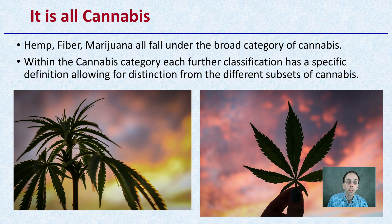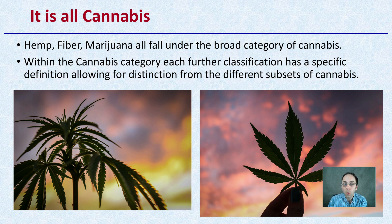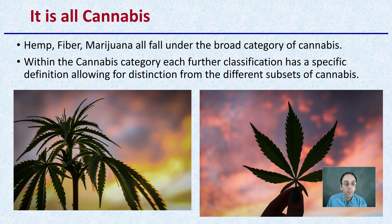First off, it's all cannabis in the sense that hemp, fiber, and marijuana all fall under the broad category of cannabis. Within the cannabis category, though, each offers further classification and has a specific definition allowing for distinction from the different subsets within the broader term that we call cannabis.